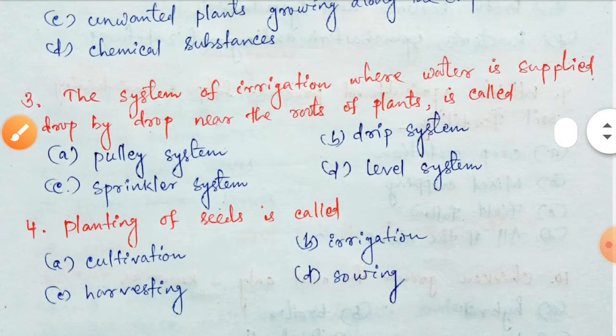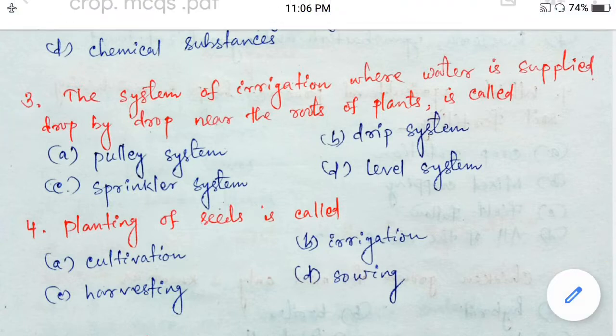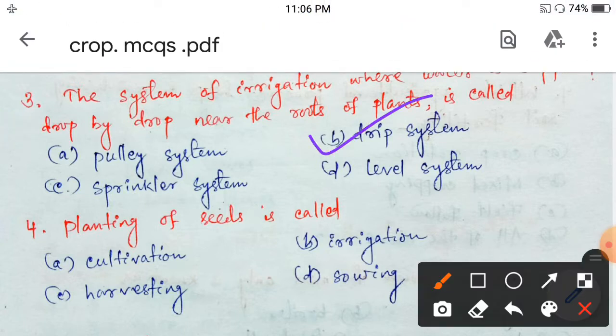Next question: the system of irrigation where water is supplied drop by drop near the roots of plants is called — pulley system, drip system, sprinkler system, or level system? The type of irrigation in which water is supplied drop by drop is called the drip system, option B.